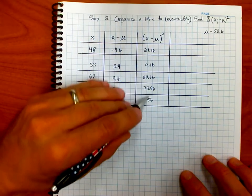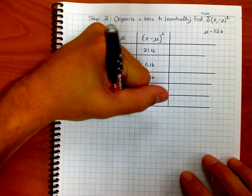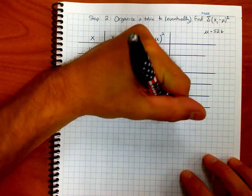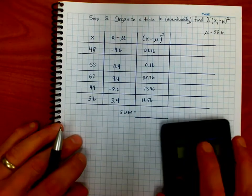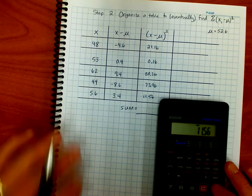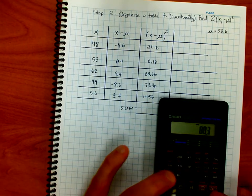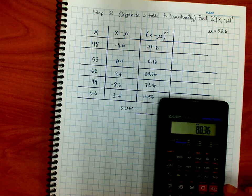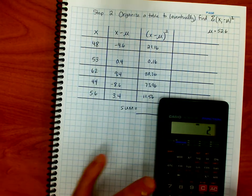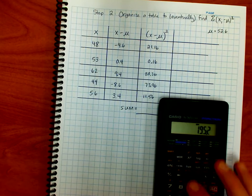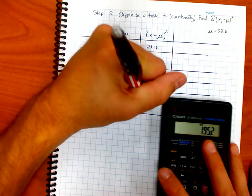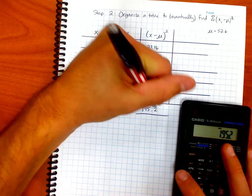In other words, this column that I calculated, these five values, I'm going to add them up. So what is the sum of those five values? Well, let's add them up here. 11.56, 73.96, notice no rounding, 88.36, 0.16, and 21.16. It gives me a grand total of 195.2. We're almost there.